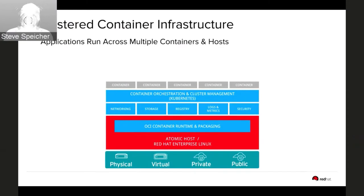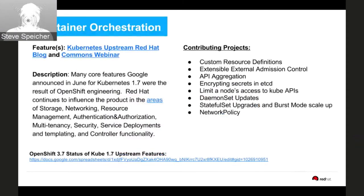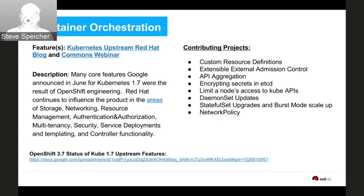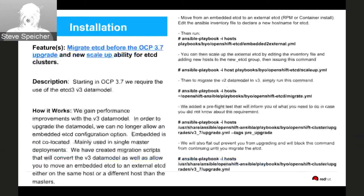Moving down the stack to the orchestration layer: there's already a Commons webinar covering the work done in Kubernetes 1.7, so I encourage you to watch that. One thing to highlight is Custom Resource Definitions — one of the ways extensibility has been integrated into the platform, making it easier to add capability into a running Kubernetes instance — including encryption and secrets, daemon sets, and upgrades to both stateful sets and burst mode for scale-up.